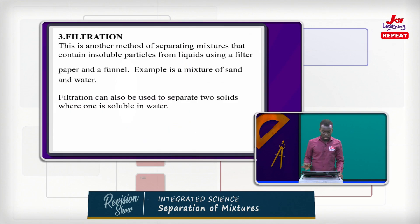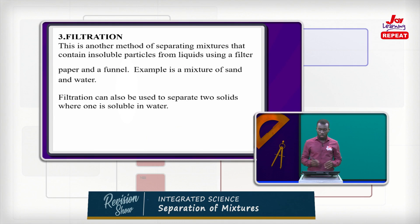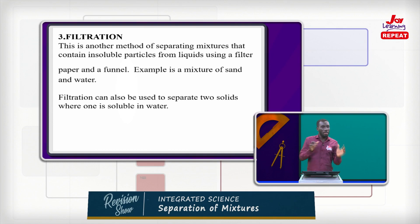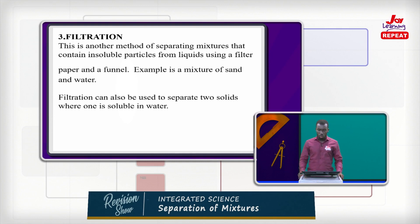Next is filtration — another method of separating mixtures that contain insoluble particles from a liquid using a filter paper and a funnel. An example is a mixture of sand and water. When sand and water come together, they don't form a complete solution — there will be insoluble particles of sand in the water, and the right method for this is filtration. Filtration can also be used to separate two solids where one is soluble in water, such as water and salt or water and sugar.